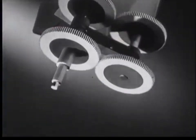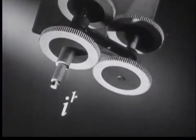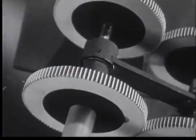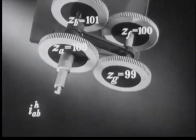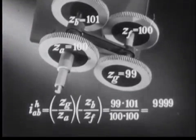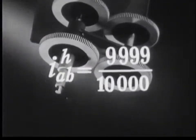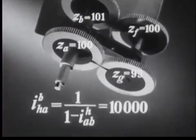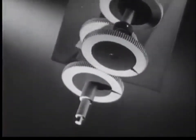In planetary gears with two pairs of wheels with external teeth, the value of the suspended driver gear ratio is positive. The direction of rotation of the driven and driving wheels is the same. If this ratio is close to one, then such transmissions have great kinematic capabilities. With the specified numbers of teeth, for one full revolution the driven gear wheel will turn only one ten-thousandth of a revolution, since the total gear ratio is ten thousand.